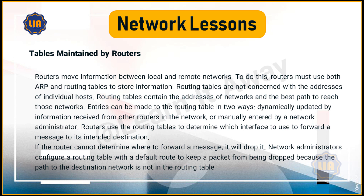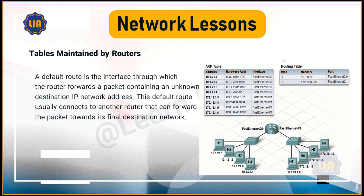Routers use the routing tables to determine which interface to use to forward a message to its intended destination. If the router cannot determine where to forward a message, it will drop it. Network administrators configure a routing table with a default route to keep a packet from being dropped because the path to the destination network is not in the routing table. A default route is the interface through which the router forwards a packet containing an unknown destination IP network address. This default route usually connects to another router that can forward the packet towards its final destination network.